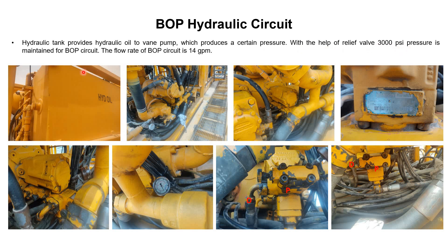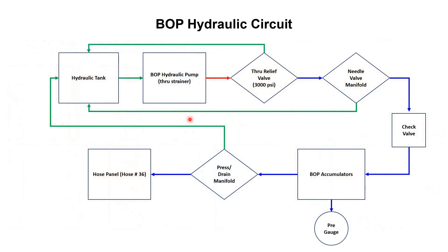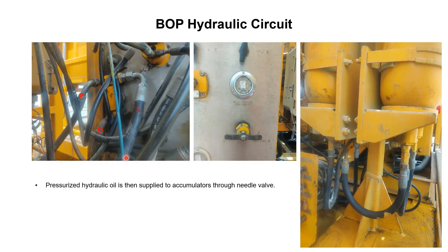3000 psi pressure is maintained for the BOP circuit and the flow rate of the BOP circuit is 14 GPM — 14 gallons per minute. This hose coming from the relief valve is written as the supply hose. This is the needle valve manifold, which has two outlets: one towards drain and one towards pressure. When this needle valve is in open position, all the pressure coming from the relief valve — that is 3000 psi — is drained back to the tank.